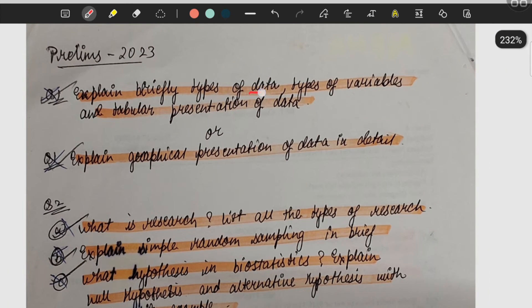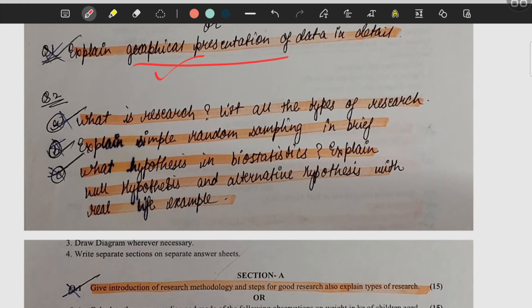Then types of data, types of variability, and tabular presentation of data, graphical presentation of data. Know about the tabular representation and graphical representation. Then what is research and its types, what is simple random sampling.